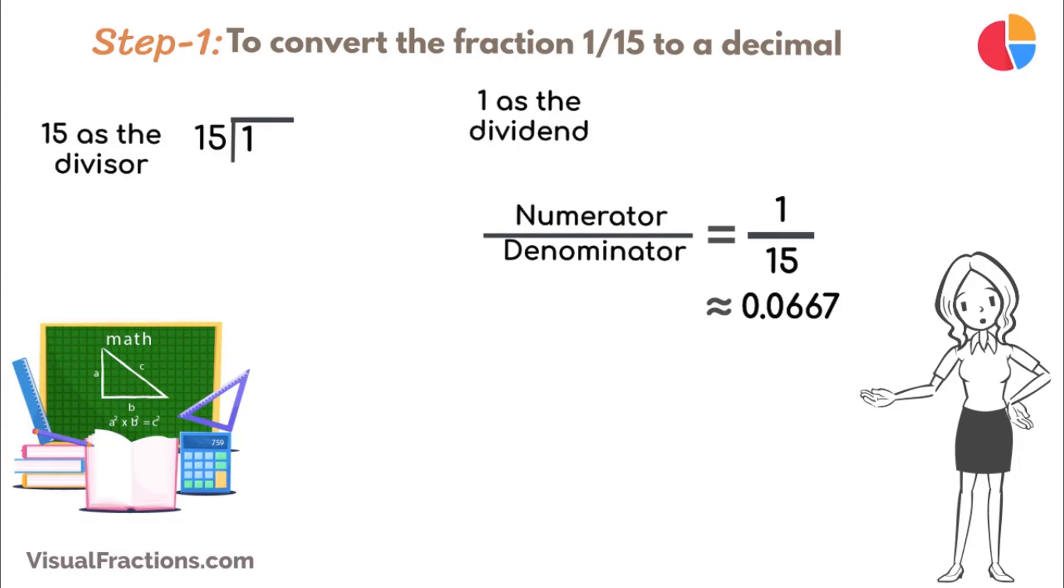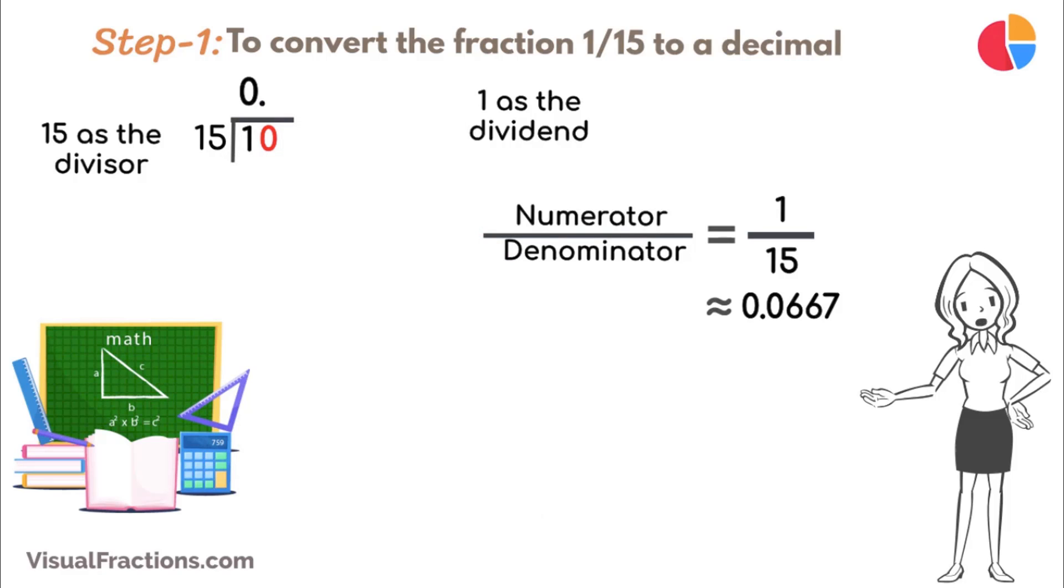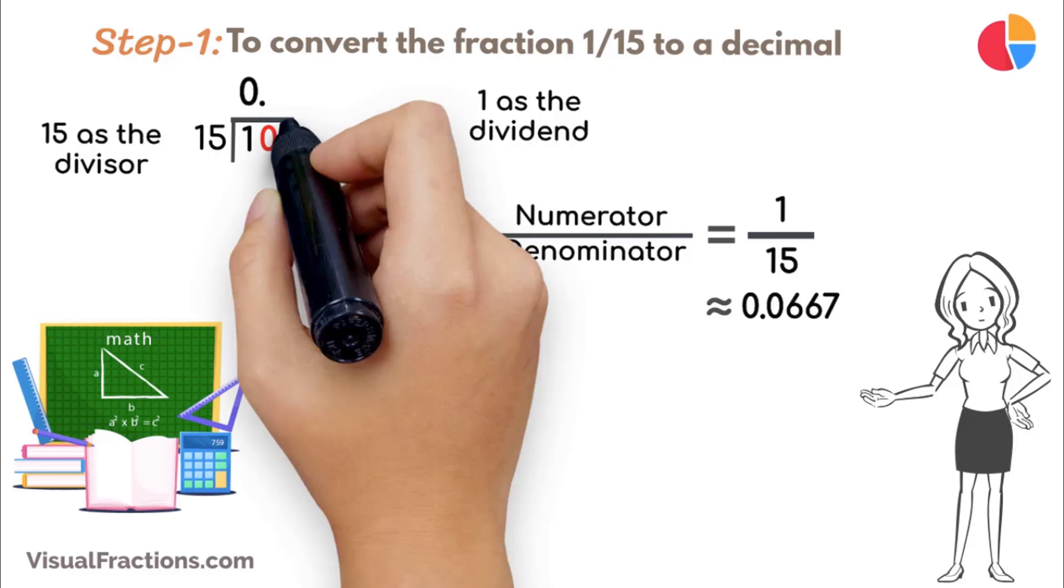Since 15 doesn't fit into 1, place a decimal point in our quotient and bring down a 0, making it 10. 15 goes into 10 zero times, so we initially put 0 in the quotient before the decimal.